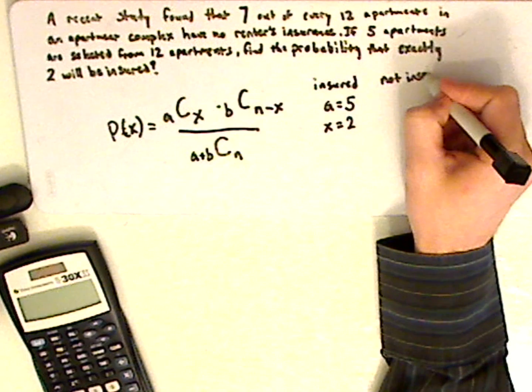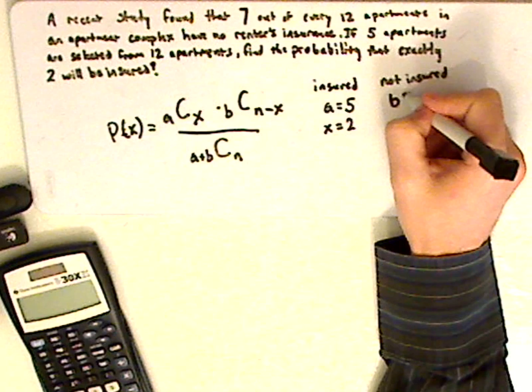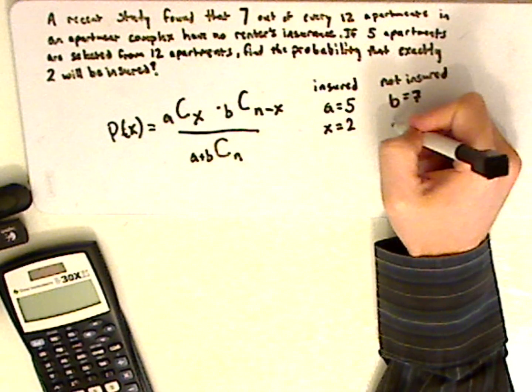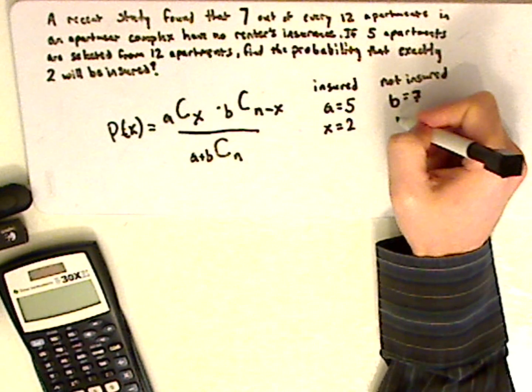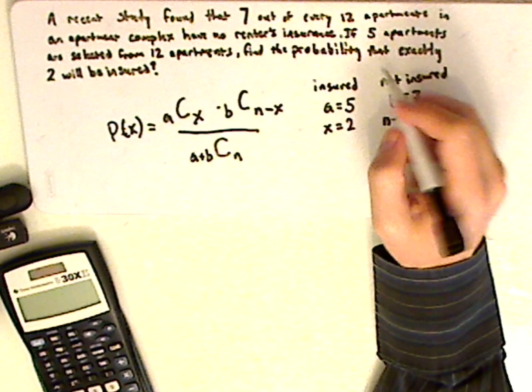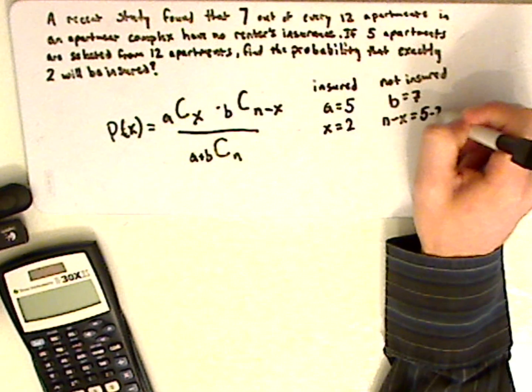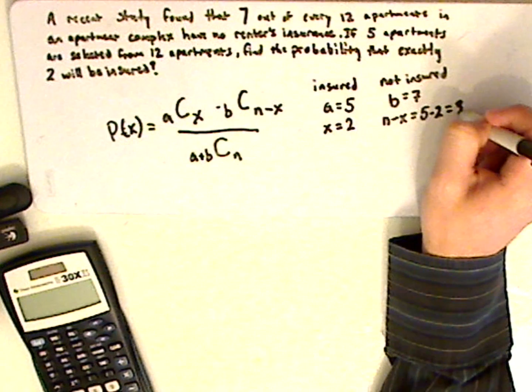Not insured, which is B, which would be 7. And then you're choosing N minus X. N is 5, so it's 5 minus 2 equals 3.